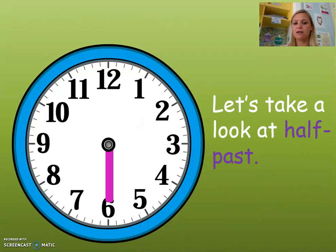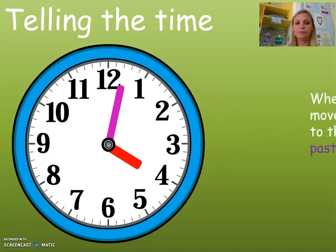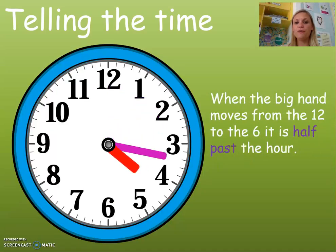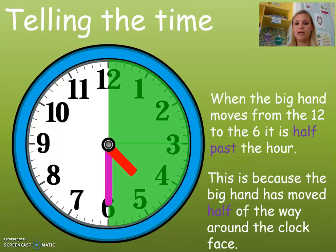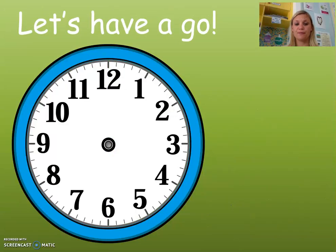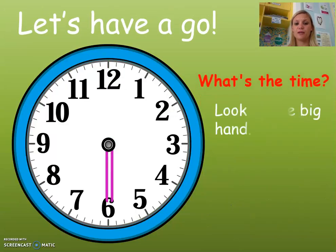Let's take a look at half past. When the big hand moves from the 12 to the 6, it's halfway past the hour. This is because the big hand has moved half of the way around the clock face. So, we look at the big hand — it's on the 6, so we know it's half past.